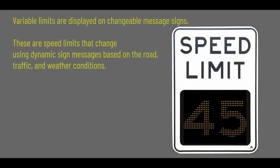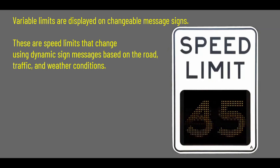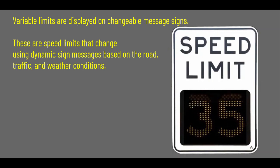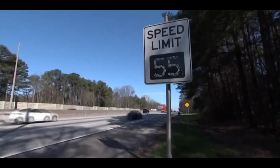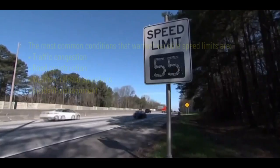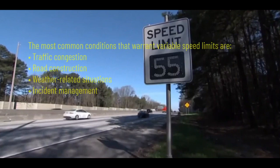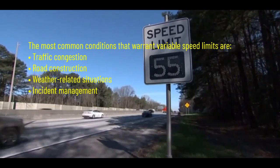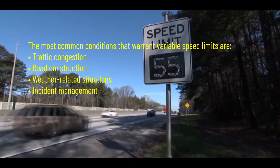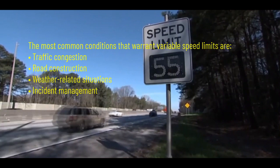Variable speed limits are displayed on changeable message signs at locations where roadway conditions regularly require speeds to reduce more than 10 miles per hour below the posted speed limit. They change using dynamic sign messages based on road, traffic, and weather conditions. The most common conditions that warrant variable speed limits are traffic congestion, road construction, weather-related situations, and incident management.